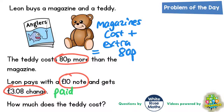That's because if you knock off the £3 from £10 you get £7, and then knock off the 8p from £7 you get £6.92. So he must have paid £6.92. If you can't do that in your head you could of course do a column method.